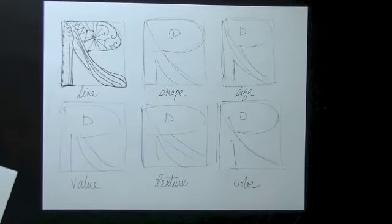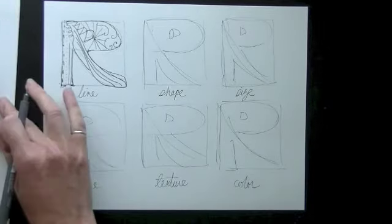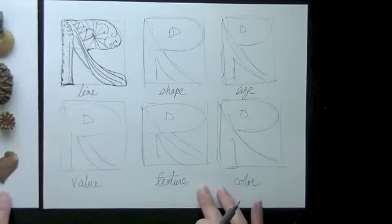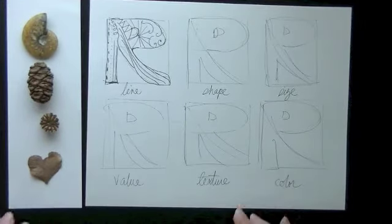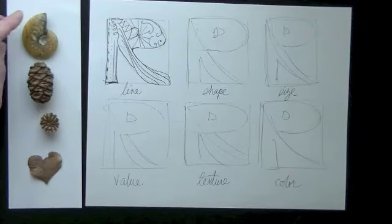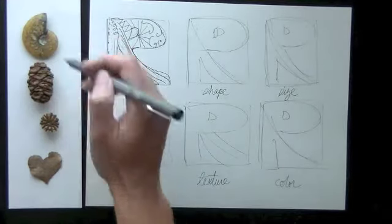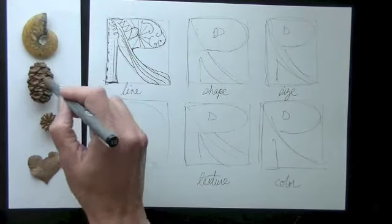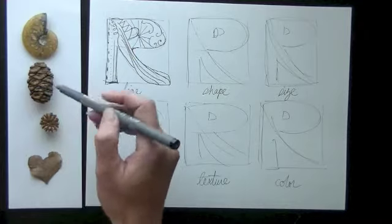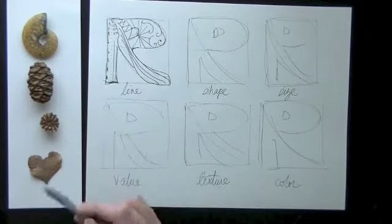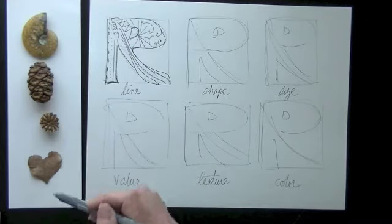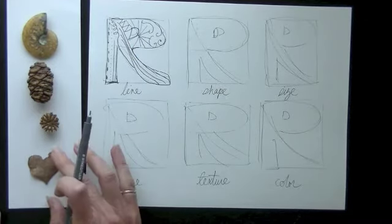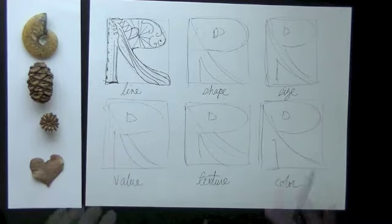Next up is shape. I brought in, to inspire us, some shapes from nature: an ammonite — that spiral — you've got these rhombus diamonds in this sequoia pine cone, the star of the poppy cap, and a heart leaf.